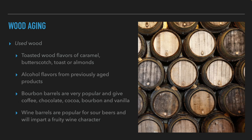Brewers can also use used or toasted wood. Toasted wood can contribute flavors of caramel, candies, butterscotch, toast, or almonds. Alcoholic flavors from products previously aged in a barrel can also transfer into the beer. Bourbon barrels are very popular for aging beer since distillers can only use them once and then have to sell them. Bourbon barrels contribute flavors and aromas of coffee, chocolate, cocoa, bourbon, and vanilla, and so they are widely used in imperial stouts.